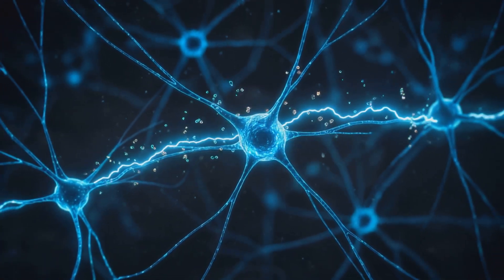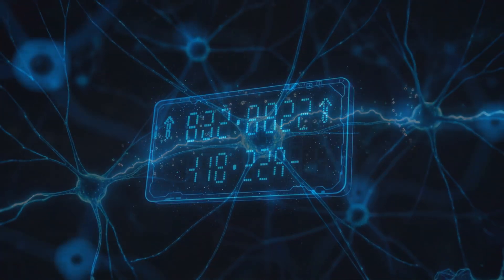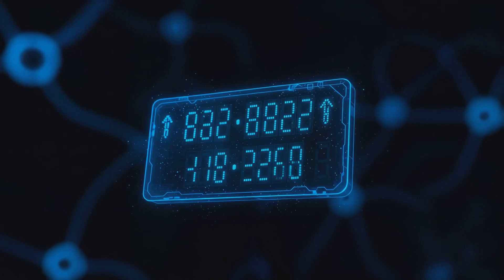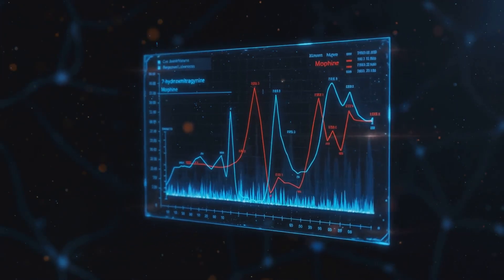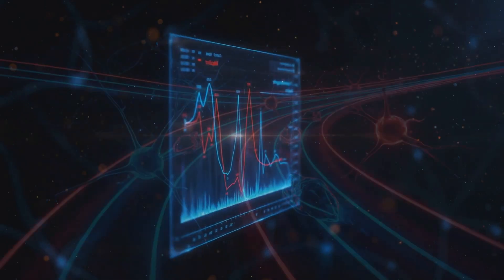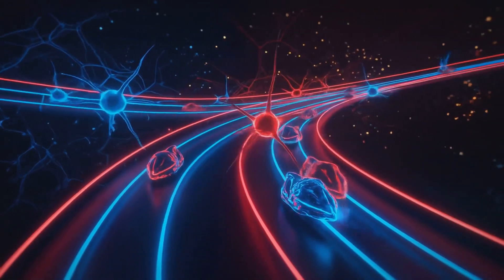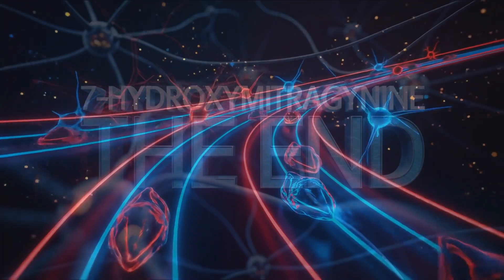But here's where they're similar. Both 7-hydroxymitrogenine and morphine mess with your brain's response times. They alter how quickly your noggin reacts to stuff, which could seriously impact how you perceive and interact with the world. It's a neurological showdown with some pretty high stakes for brain function.